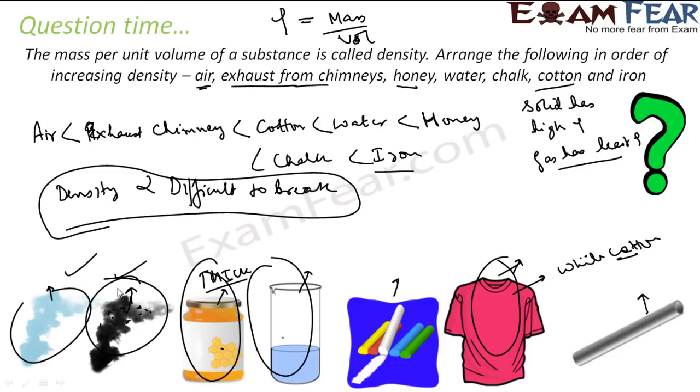So looking at it from the 'difficult to break' perspective: iron is most difficult to break, so it has the highest density. And then chalk comes next.